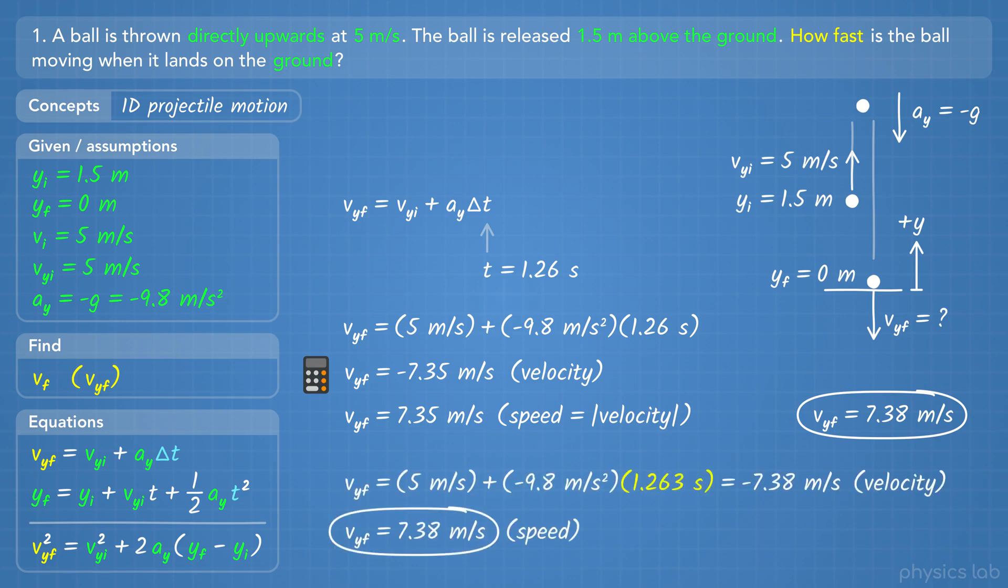If we rounded time to three decimal places instead, we'd get 7.38 meters per second. So if you're rounding a number in the middle of a problem, make sure you keep enough decimal places so your final answer is accurate. Or if possible, keep everything as variables, and only plug in numbers at the end.